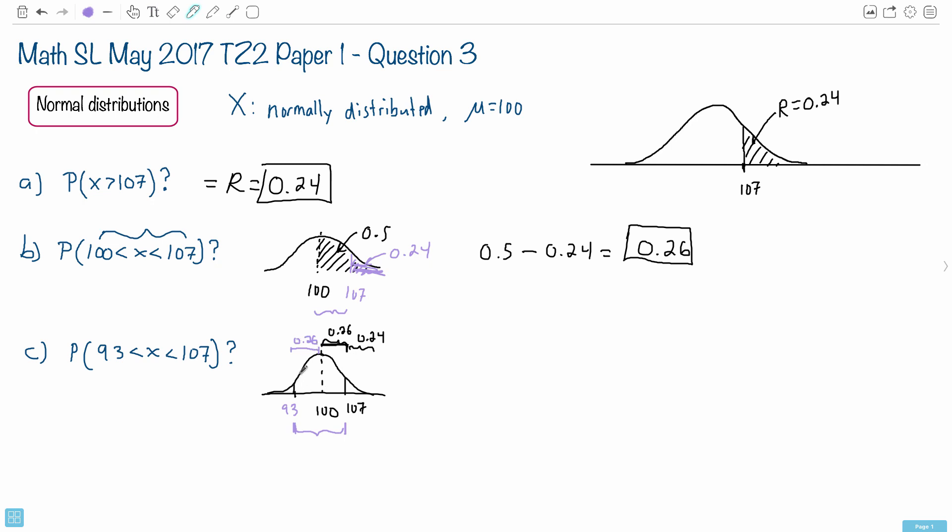And because of that, if I want to know this area right here, which is from 93 to 107, all I have to do is add up those two probabilities. So it's going to be 0.26 plus 0